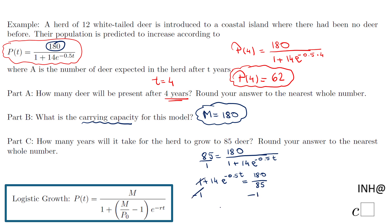From here, I will have 14e to the negative 0.5t equals 180 over 85 minus 1. Of course, you can simplify the right side if you wish. And the last step will be to divide by 14 the whole thing.